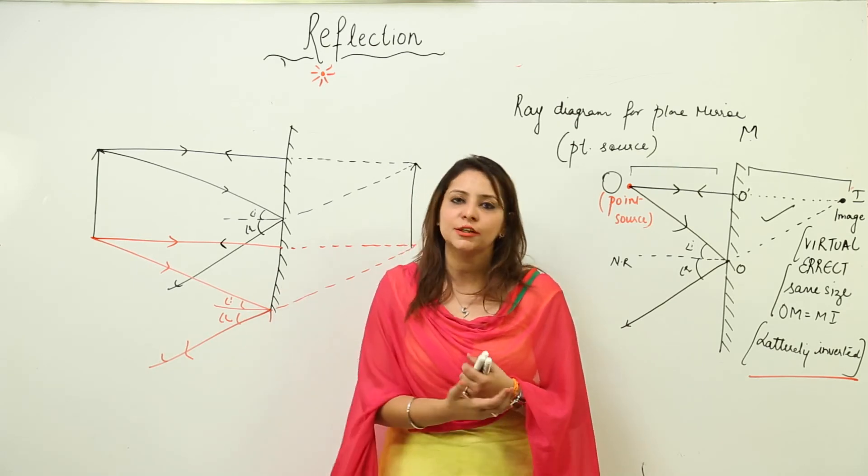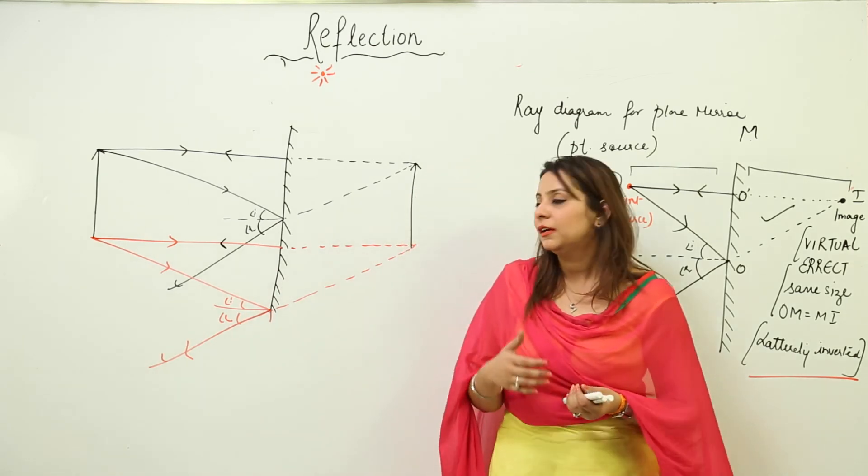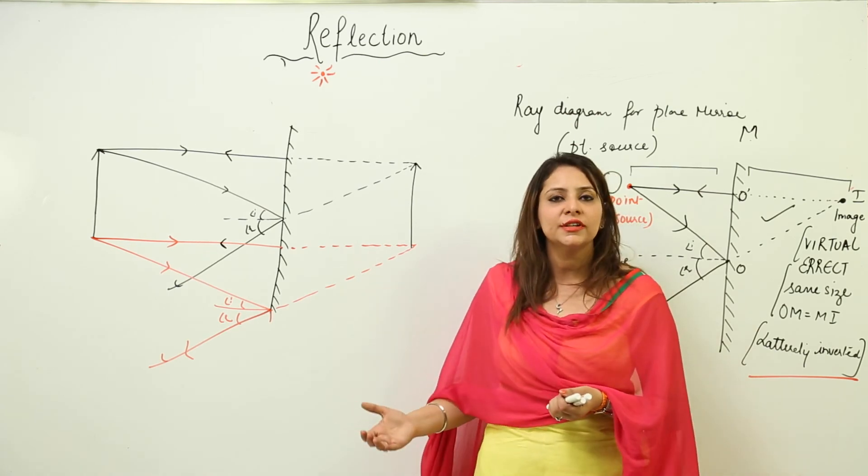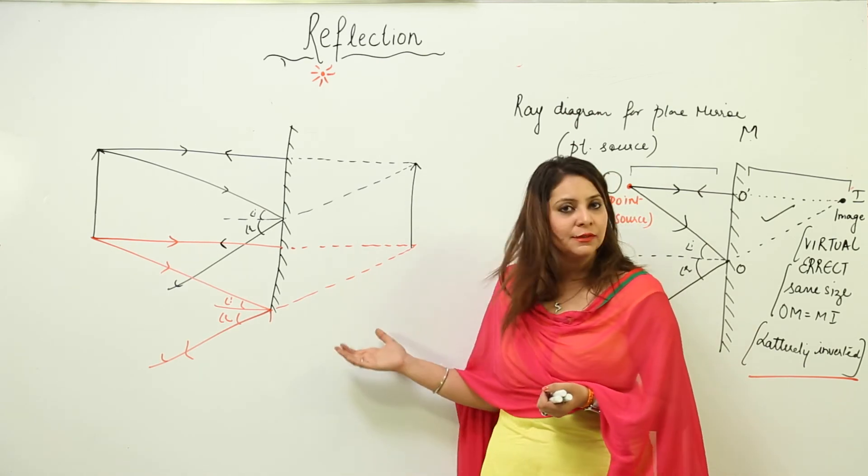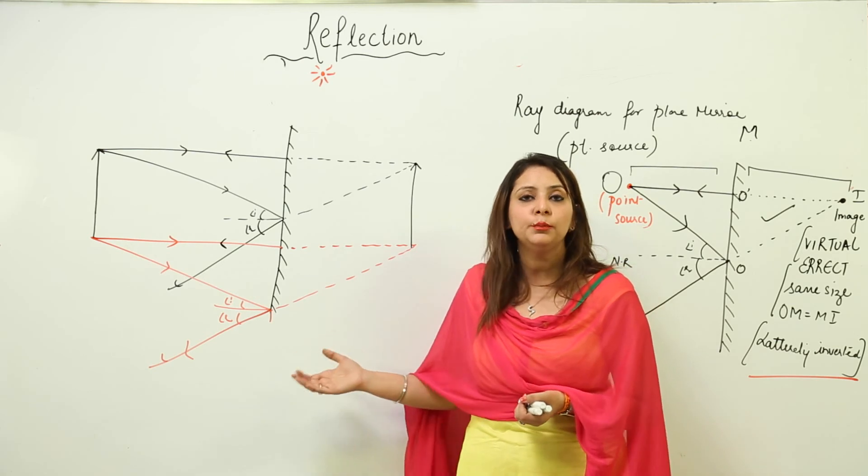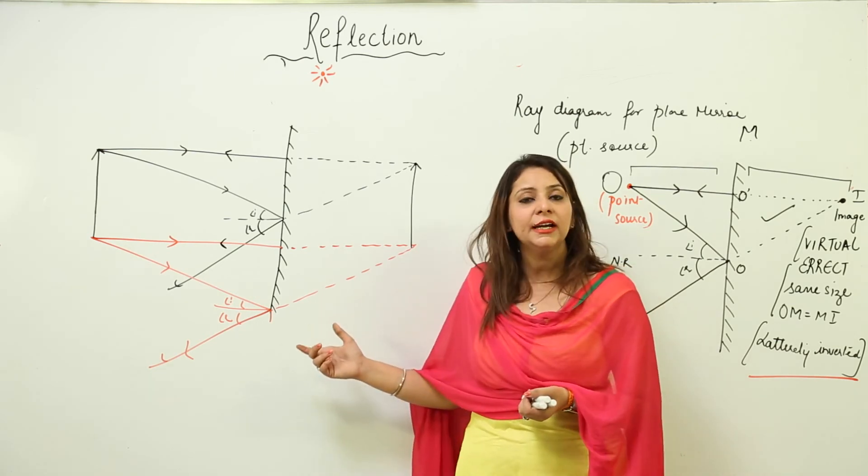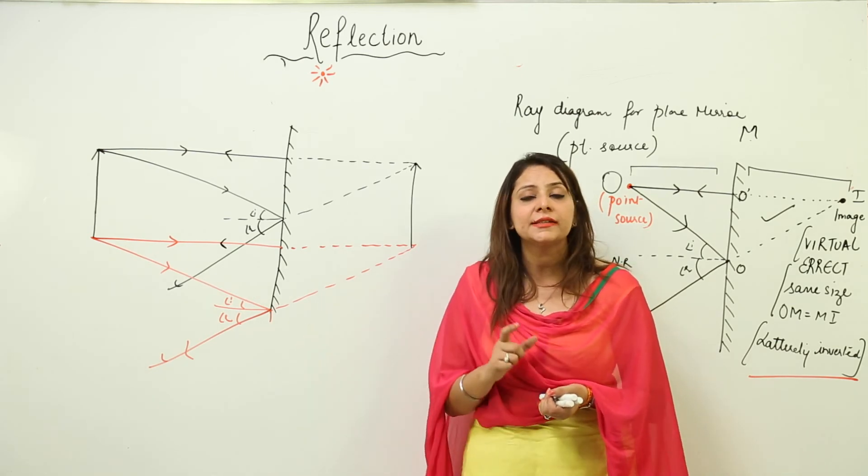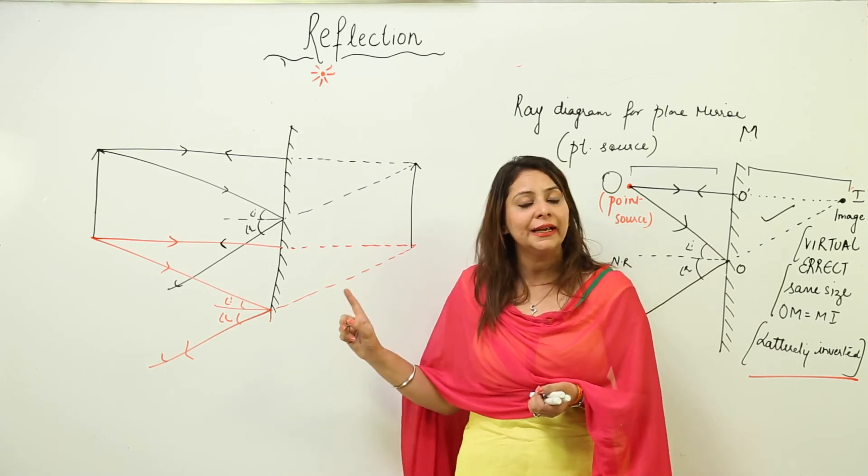So this is all about plane mirror - how we draw the image, how we denote it, and what are the characteristics of the plane mirror. By doing this we just finish off with this chapter. So just practice making the ray diagrams because these are very important.